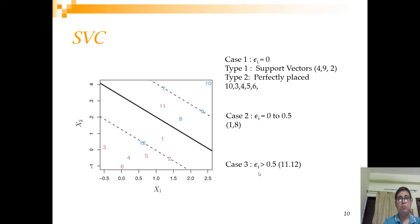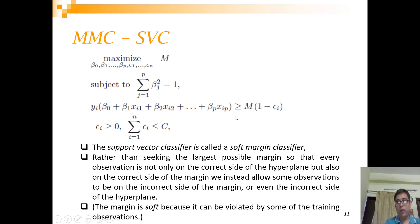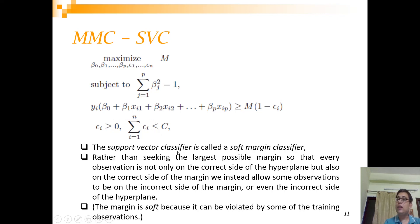We sum up the slack variables into a budget C, which is the total budget of slack across all observations. Two changes appear in the optimization: the constraint becomes yᵢ(β₀ + β^T xᵢ) ≥ m(1 − εᵢ), allowing slack, but the total slackness is bounded by C. Such a support vector classifier is also called a soft margin classifier — 'soft' because you are allowing points to be on the other side, unlike the hard margin.